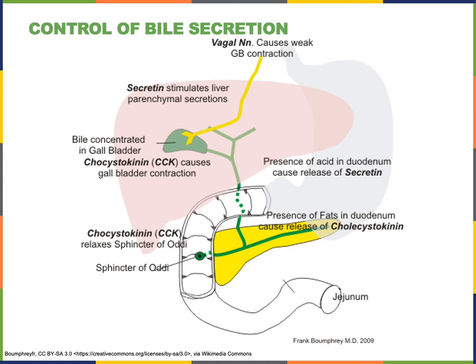The nervous system regulates the secretion of bile by stimulating contraction of the gallbladder. The parasympathetic division of the autonomic nervous system will stimulate contraction of the gallbladder. The primary endocrine mechanism that stimulates the secretion of bile is the hormone CCK, cholecystokinin. When you consume a meal that is rich in fat, that fat is detected by chemoreceptors within the duodenum, stimulating the I cells — the enteroendocrine cells that secrete CCK. CCK then travels through the blood and binds to receptors on cells in the gallbladder to stimulate contraction of the gallbladder.